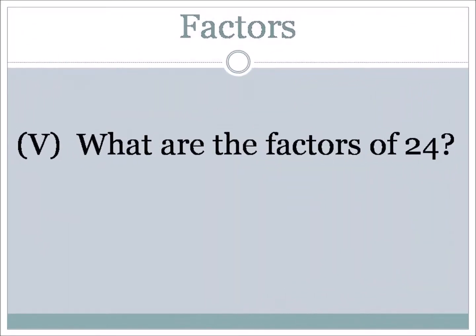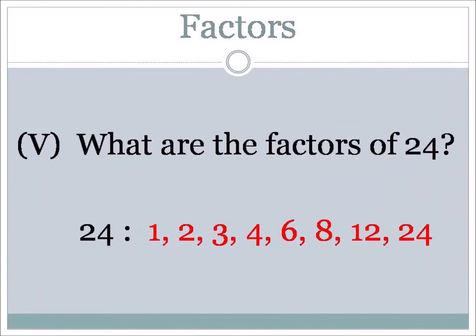Number 5, the last one: what are the factors of 24? Looking at numbers 1 through 24, factors must be the number itself or lower. The factors of 24 are: 1, 2, 3, 4, 6, 8, 12, and 24. Quite a lot of them — all can be divided into 24 without a remainder.